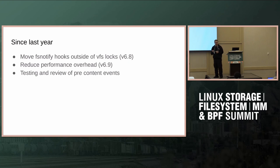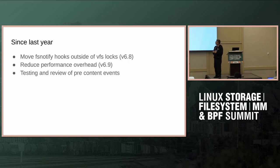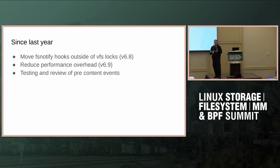The test robot found some performance regression, specifically because we introduced new hooks in places that weren't there before, like write. There's a pre-write hook that did not exist before, which added some overhead. I've made some optimizations to the FSNotify infrastructure to get rid of this overhead, and this went in in 6.9. The optimizations are also relevant and improve existing code, regardless of my new hooks.